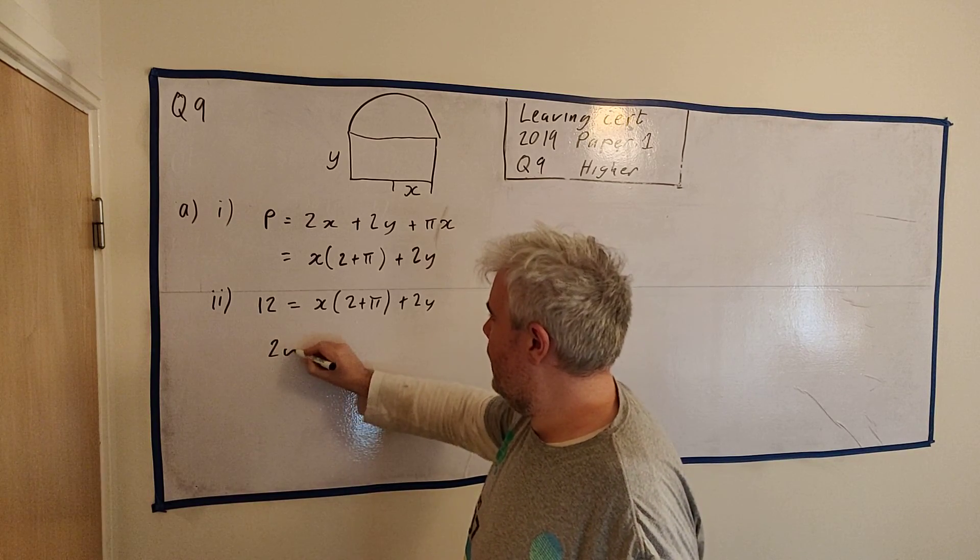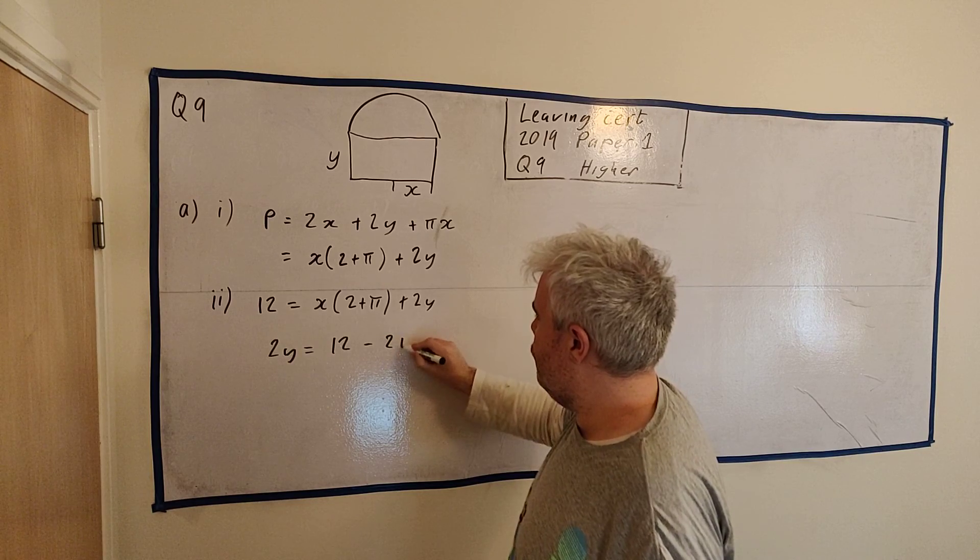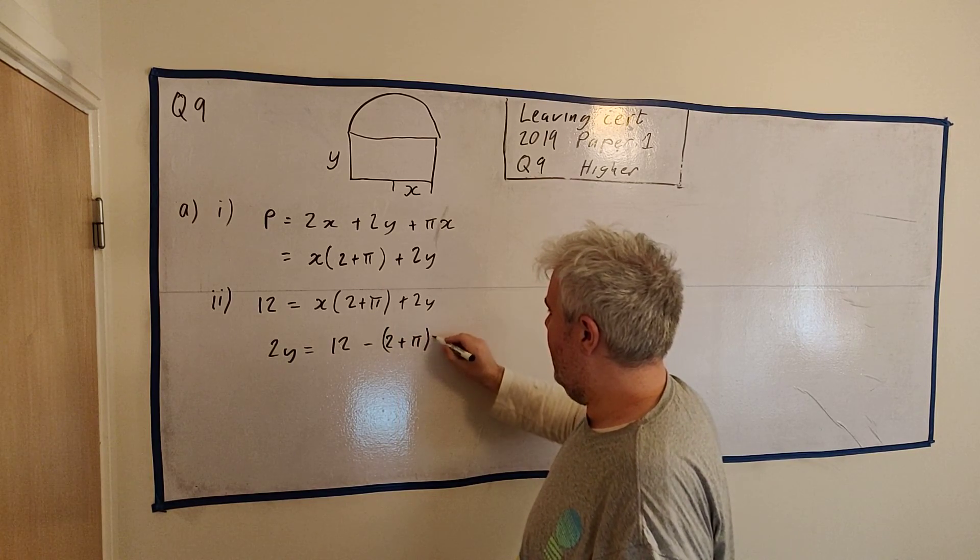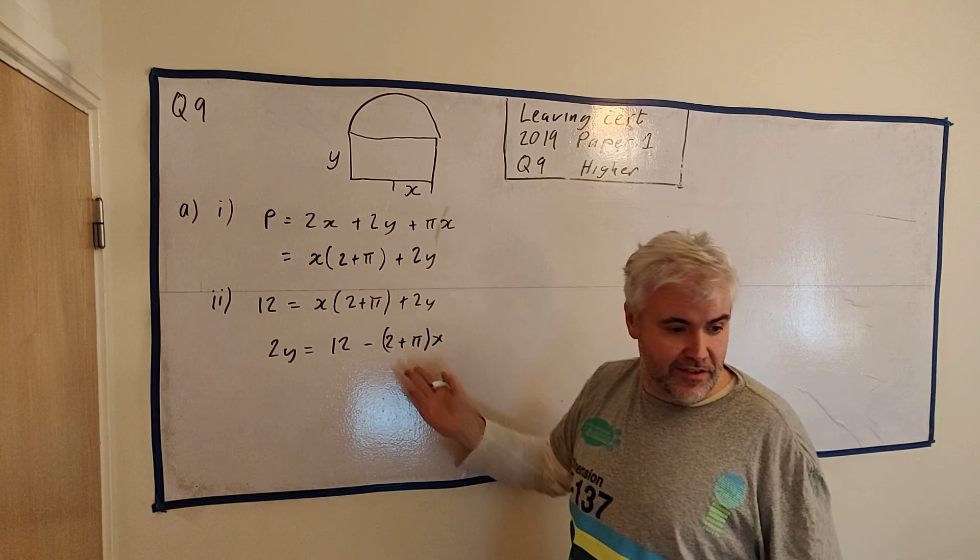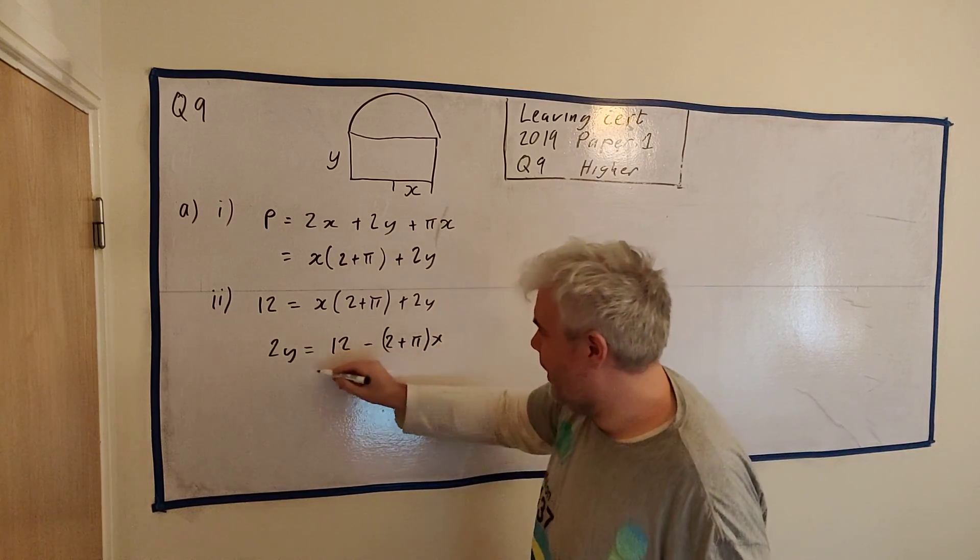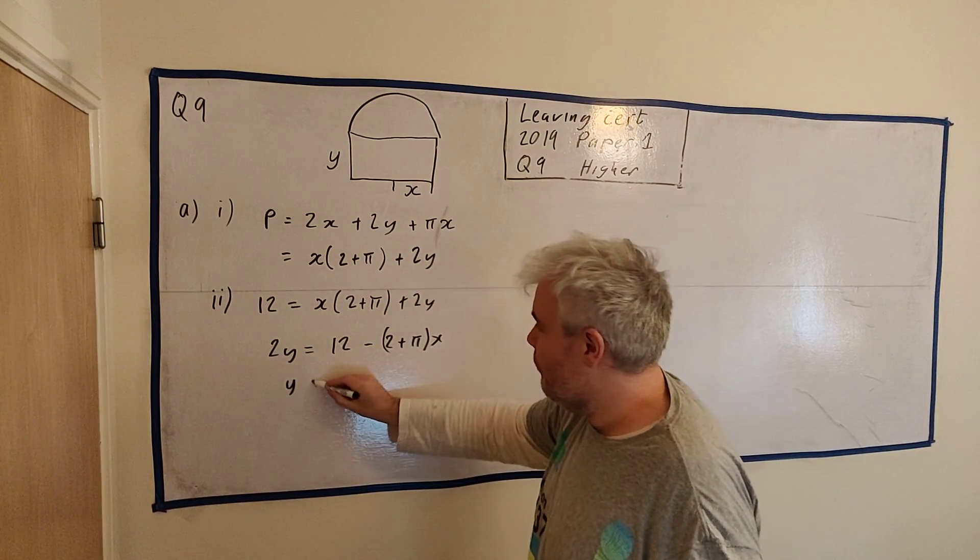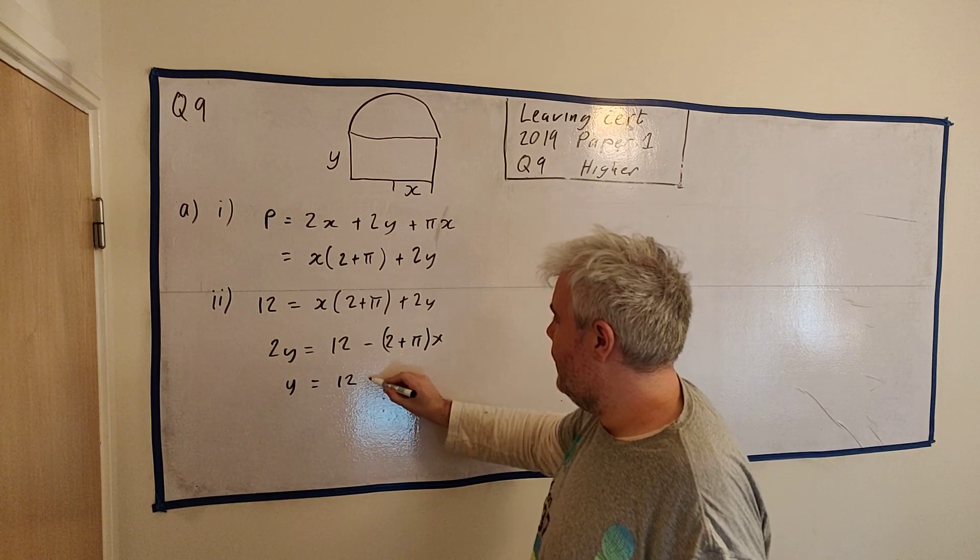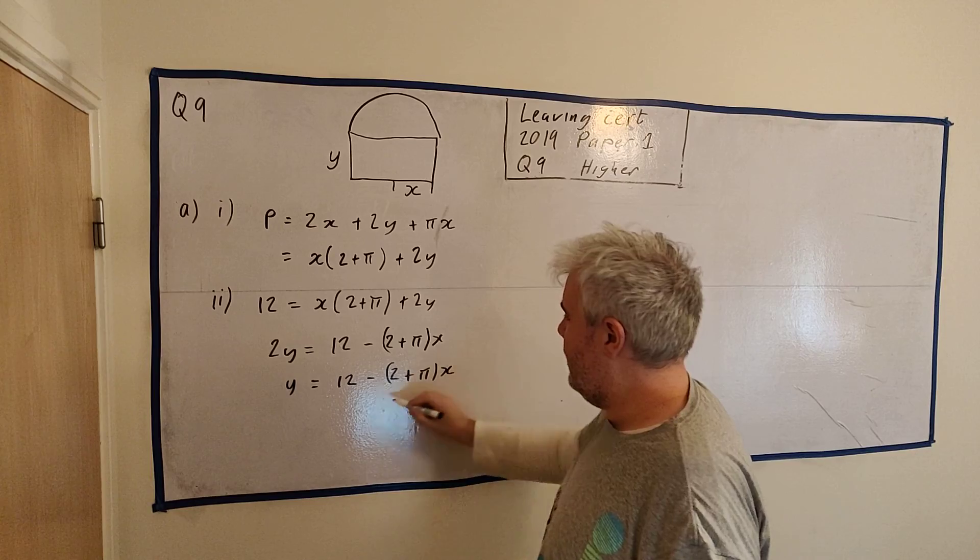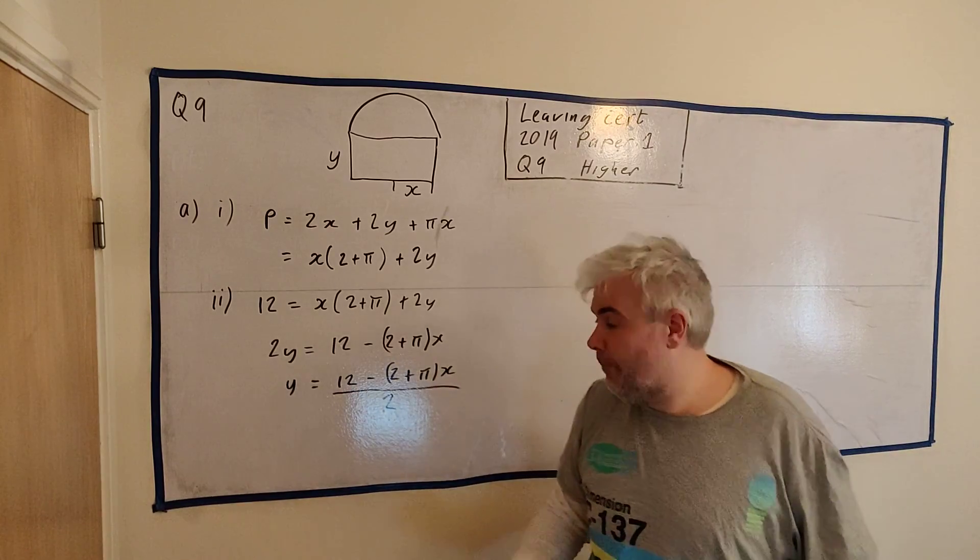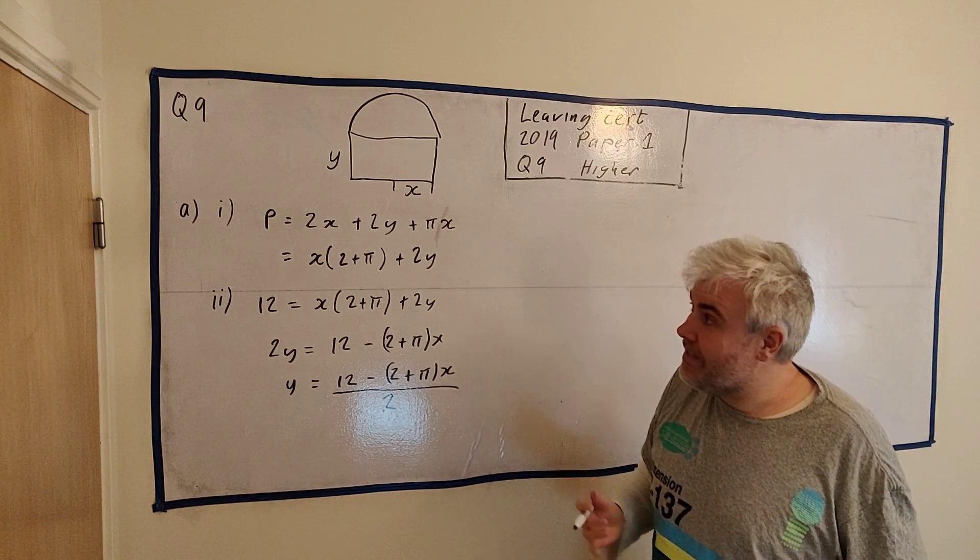And they are really just asking you to rearrange this so y is the subject of the equation. So let's start doing that now. We will start with 2y is equal to 12 - (2 + π)x. I just changed this around, really, because I have seen the answer. This little factorizing the x out has pretty much finished the answer off for me. 12 - (2 + π)x divided by 2. There we go. So I've shown where this y equals this equation comes from. That is part two.